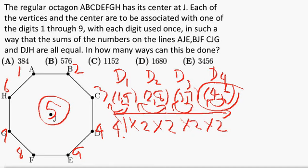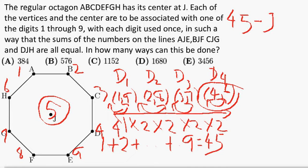That is just for one selection of the number J. How many selections of J are possible? Can we have any of the 9 digits 1 through 9 for J? Let us add up the 9 natural numbers 1 through 9 — we get a sum of 45. We take 45 and subtract J from the total. That gives us the total of the 8 vertices, and that has to be divisible by 4, because we divide it into 4 equal subsums — each representing the sum of the two numbers on each diagonal. Therefore the sum of those 8 numbers has to be a multiple of 4.